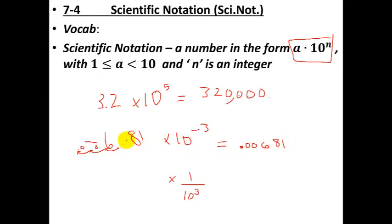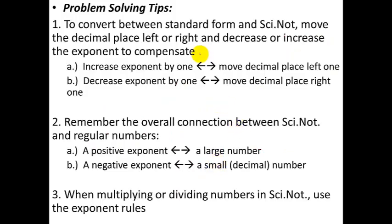Just bear in mind that the exponent tells you how many places to move the decimal place to the left or right and it's a shorthand way of writing it. To convert between standard form and scientific notation, move the decimal place left or right and decrease or increase the exponent to compensate. So if you increase the exponent by 1, you need to move the decimal place to the left. If you decrease the exponent by 1, you need to move the decimal place to the right. Remember that overall a positive exponent is going to give you a large number and a negative exponent is going to give you a small number.